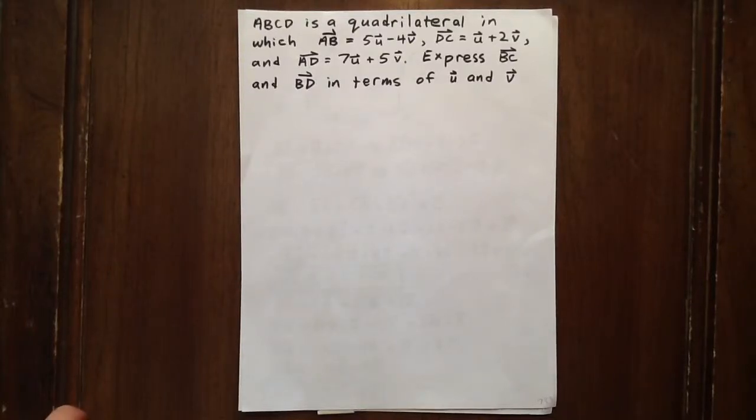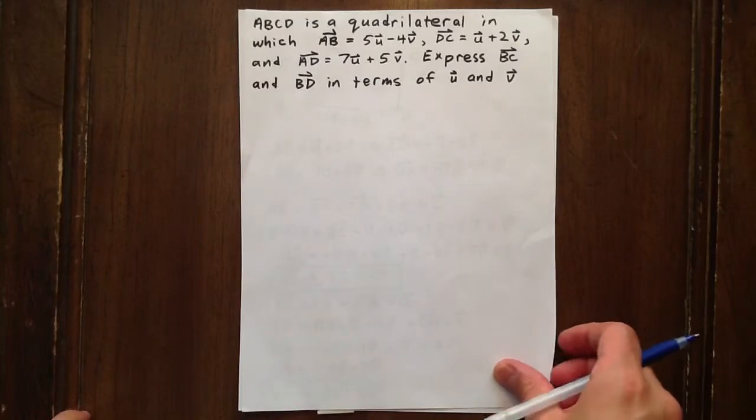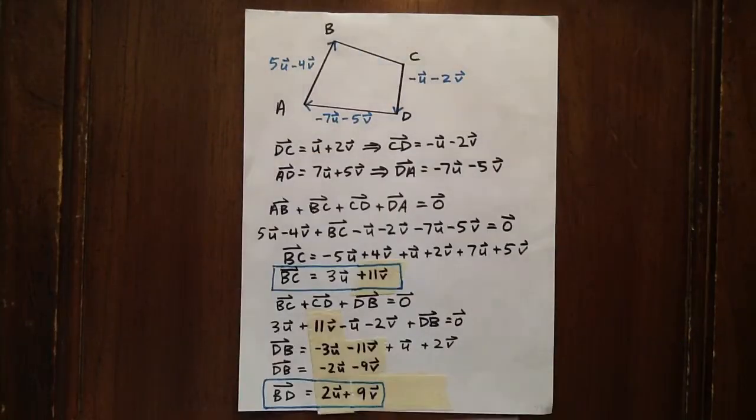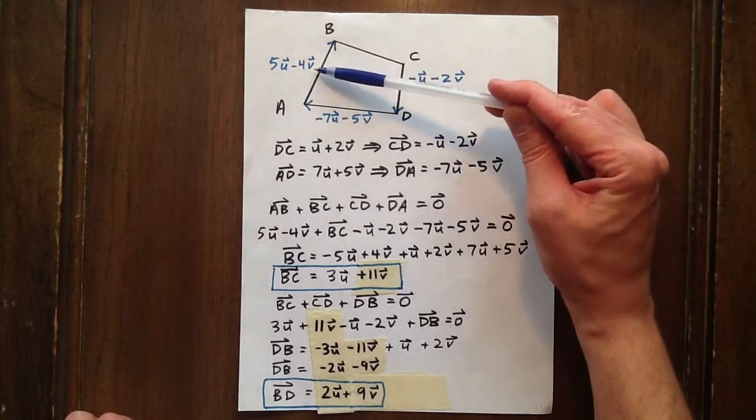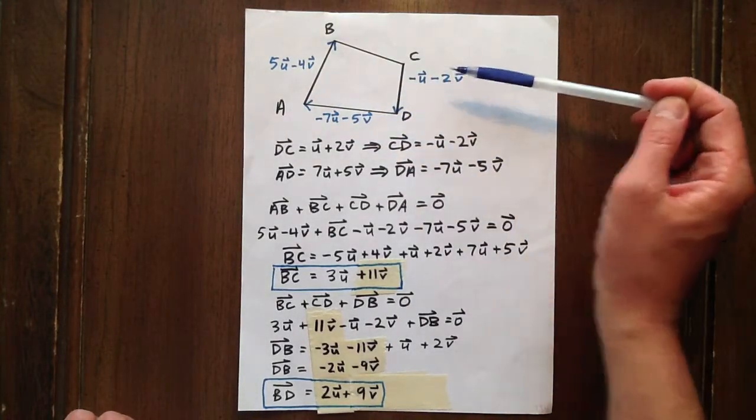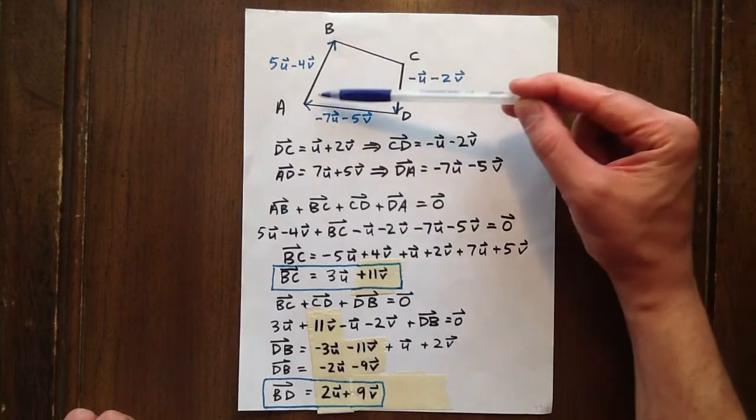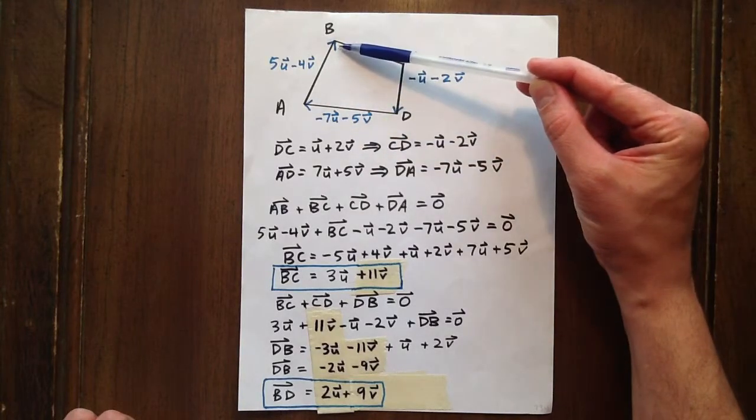Here we have a quadrilateral ABCD in which certain of the vectors that constitute it are equal to linear combinations of U and V. So we have AB equaling 5U minus 4V.